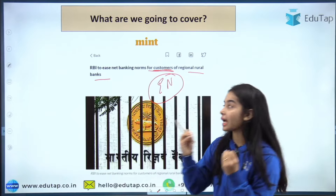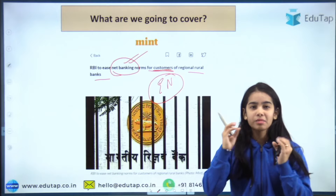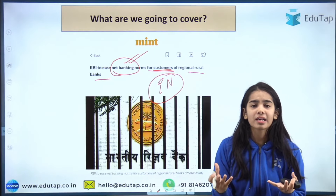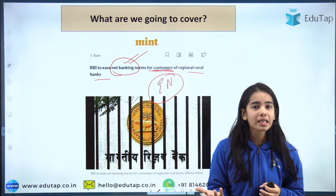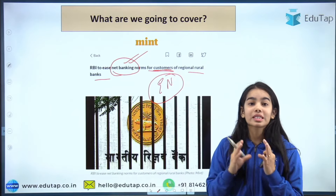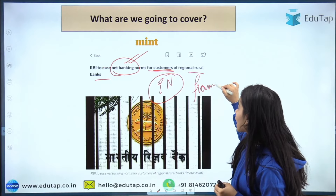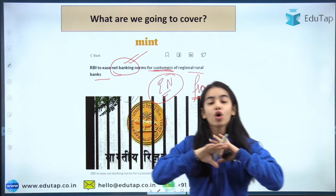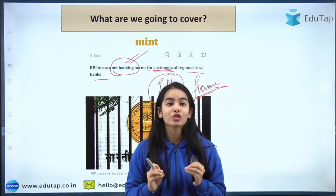This seems a little confusing — what is this eligibility norm, what is internet banking with transactional facility, and what is the other category of net banking services provided by the Regional Rural Banks? We are going to discuss the complete framework: what are the eligibility norms that have been changed and what are the new eligibility norms, so that no confusion is left in your minds.